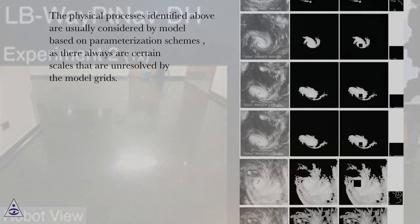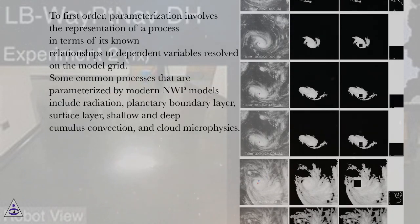The physical processes identified above are usually considered by model based on parameterization schemes, as there always are certain scales that are unresolved by the model grids. To first order, parameterization involves the representation of a process in terms of its known relationships to dependent variables resolved on the model grid.